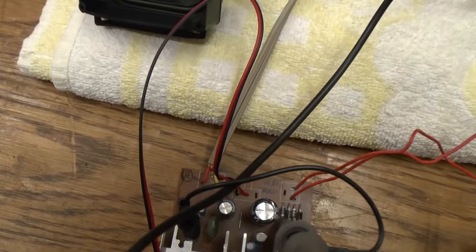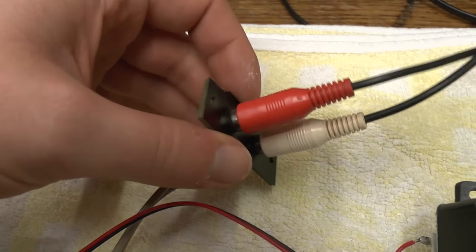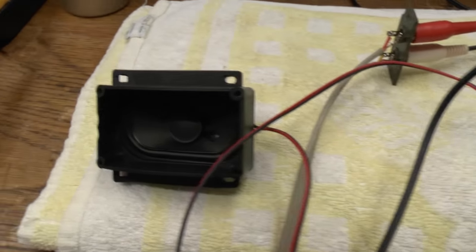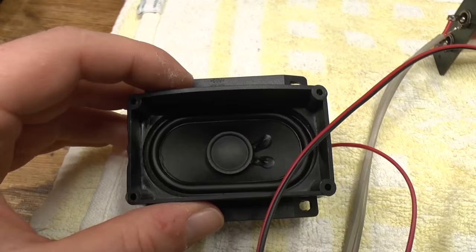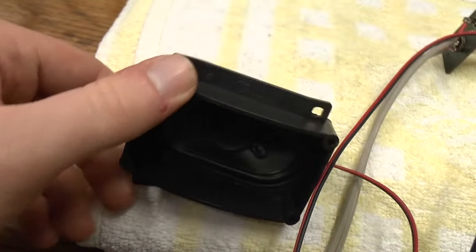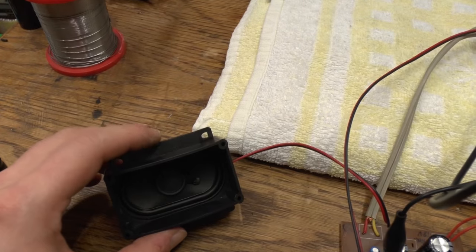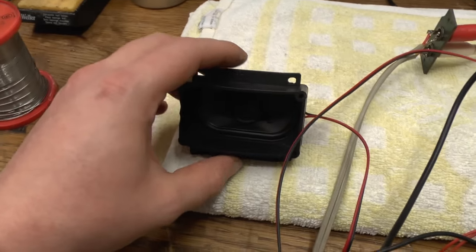I also modified the inputs and outputs. I put on these RCA jacks so that I can connect a CD player to this. And I connected these crappy TV speakers. These are only 4 ohms 5 watts. They really don't sound very good. I have them lying on this towel because if they are straight on the table they're going to rattle and it's all going to sound even worse.